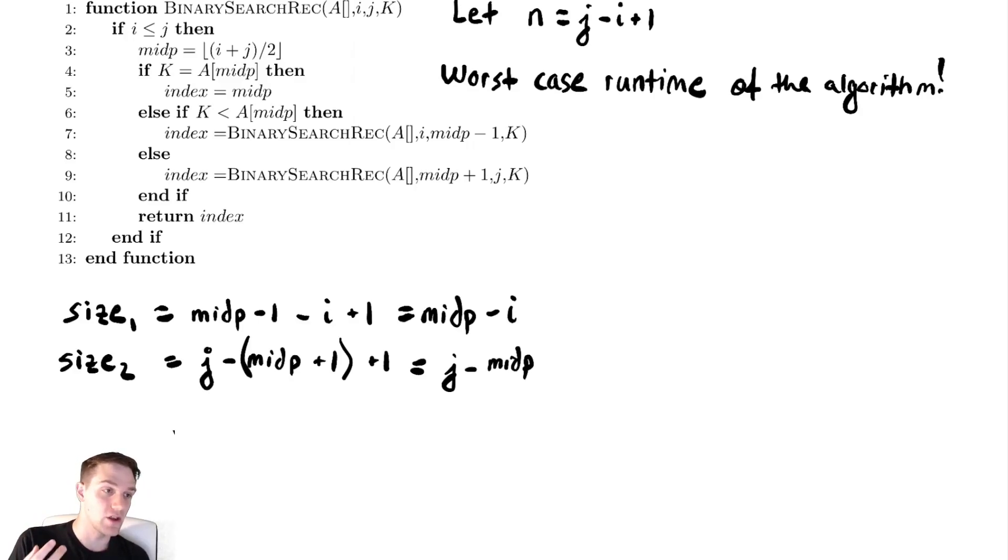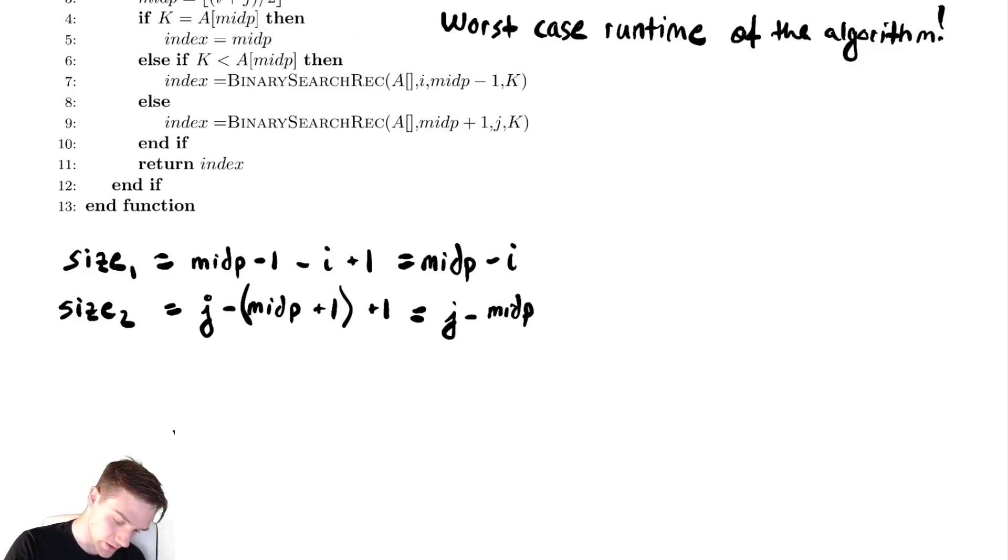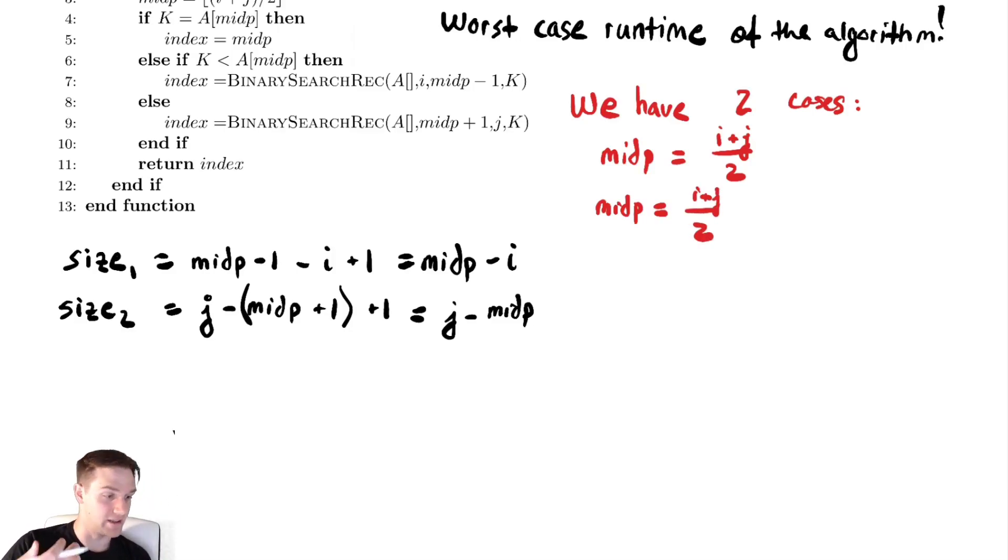Similarly, size two from the second possible recursive call, the top bound is j minus midp plus one quantity and then plus one. And again we get some nice cancellation, we get j minus midp. Now we want to try to take into account that floor function that we are applying to the arithmetic performed above. So how can we do that? Well there are two options. Either that floor function evaluates to an integer before it even, or it was originally an integer or it was a half more than an integer. So we have two cases.